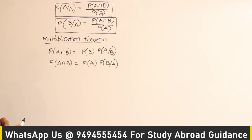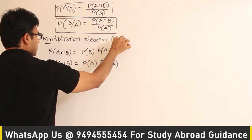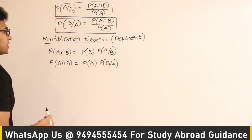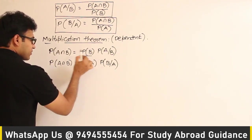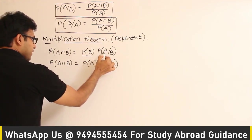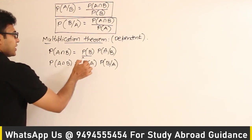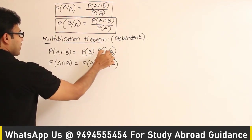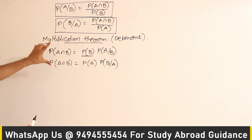This is called the multiplication theorem — specifically, the multiplication theorem on dependent events. What are dependent events? Sometimes the probability of one event happening will not affect the probability of the other event happening. But in dependent events, even after knowing one event has happened, the probability of the other event does change.